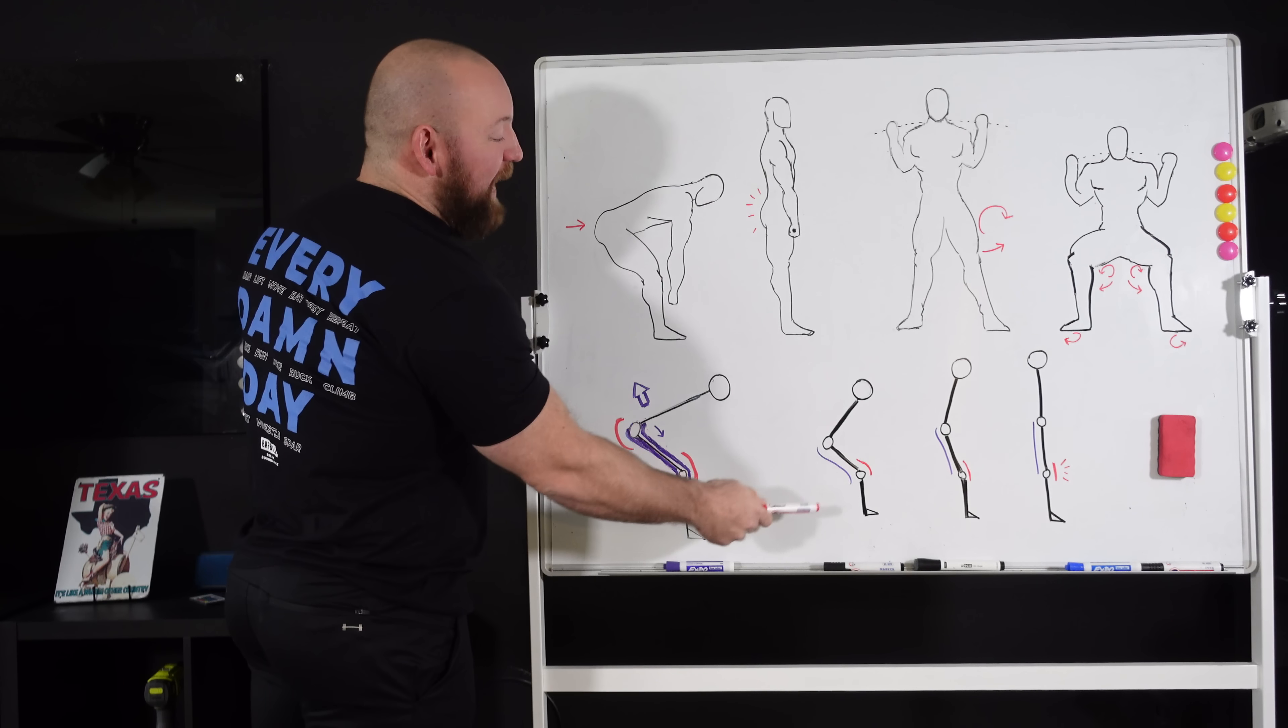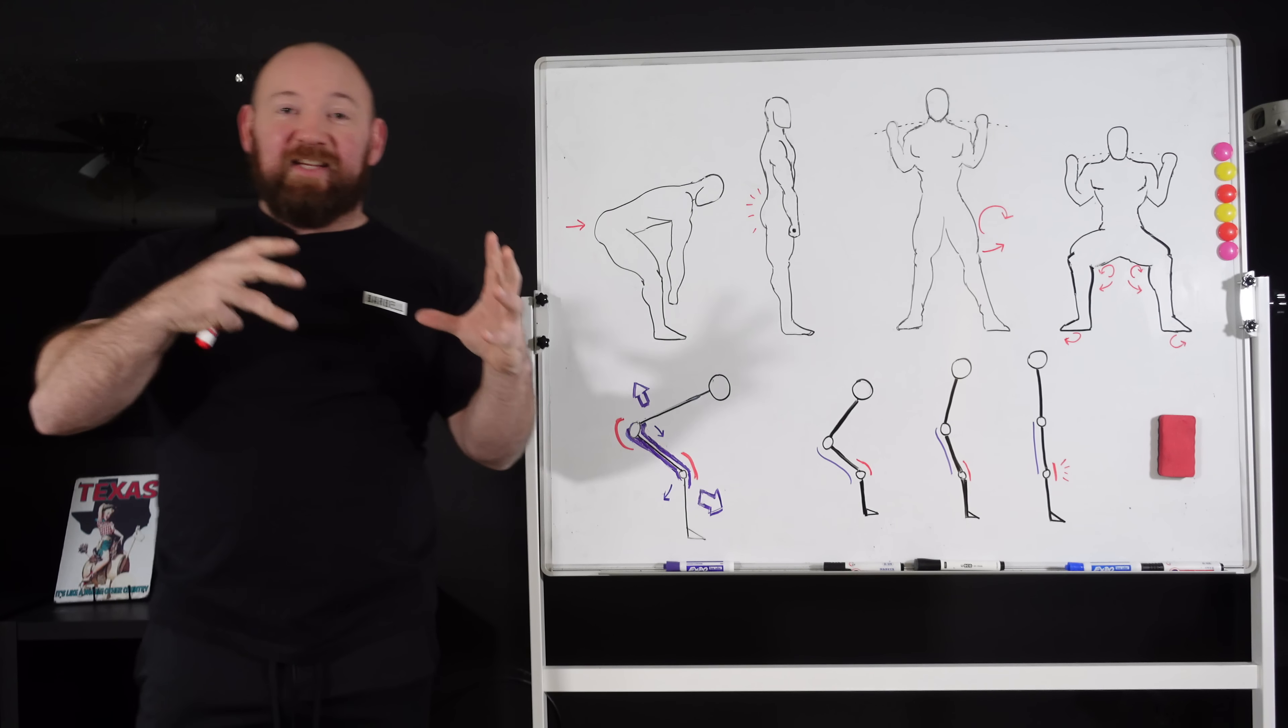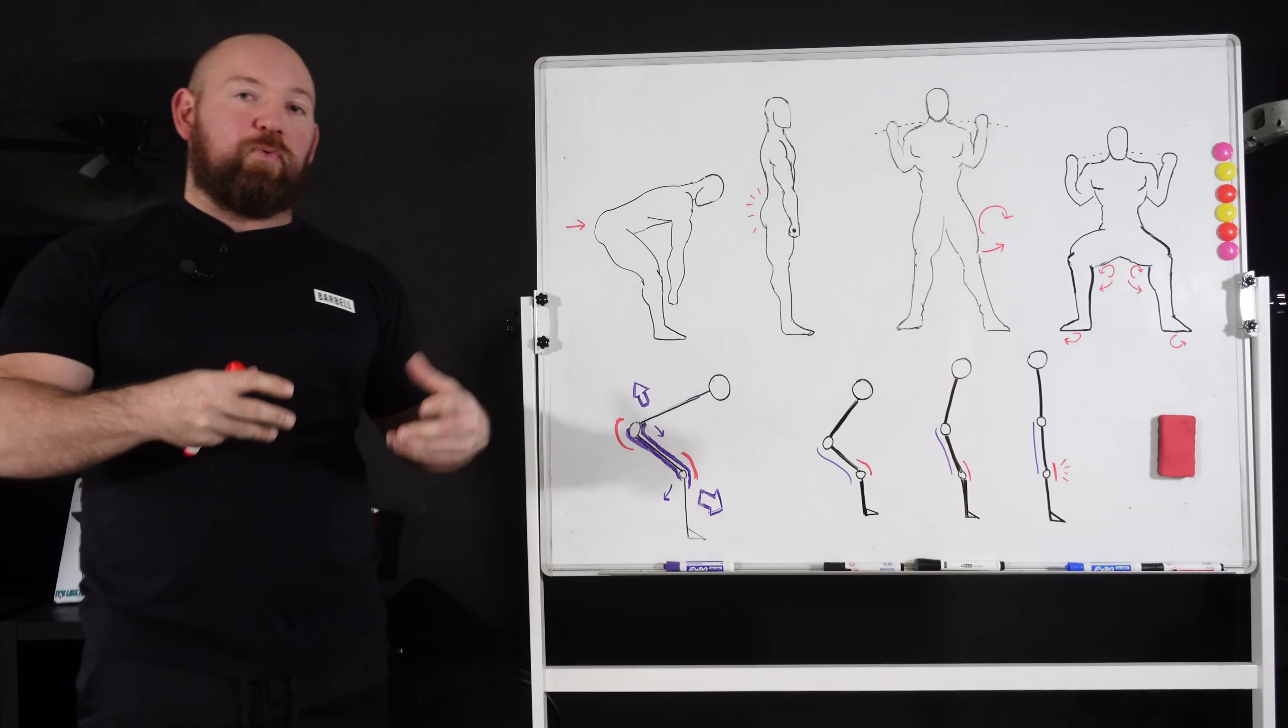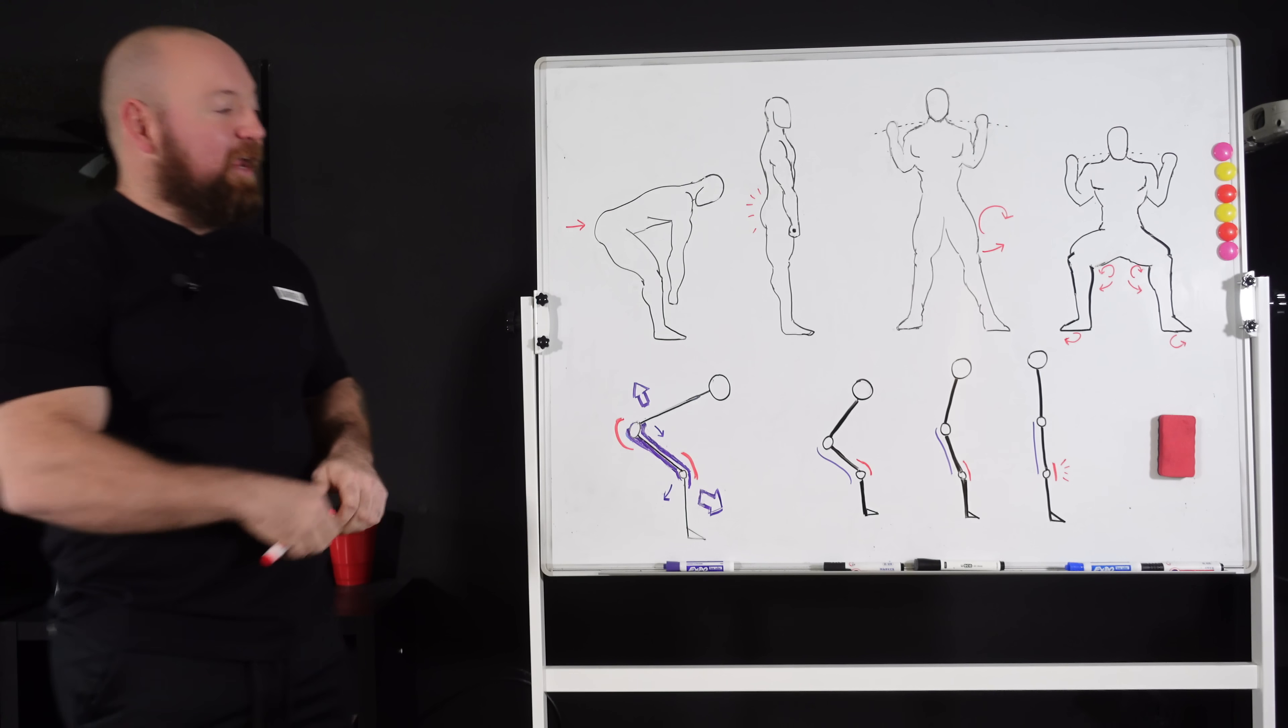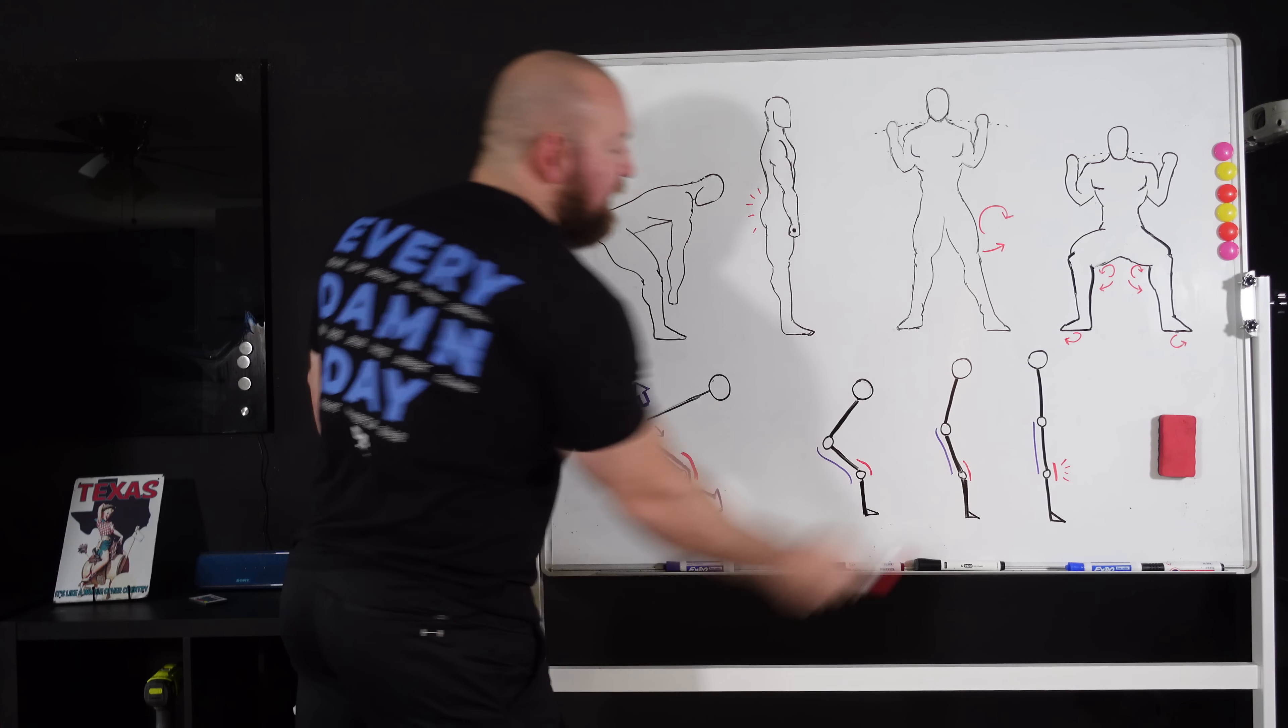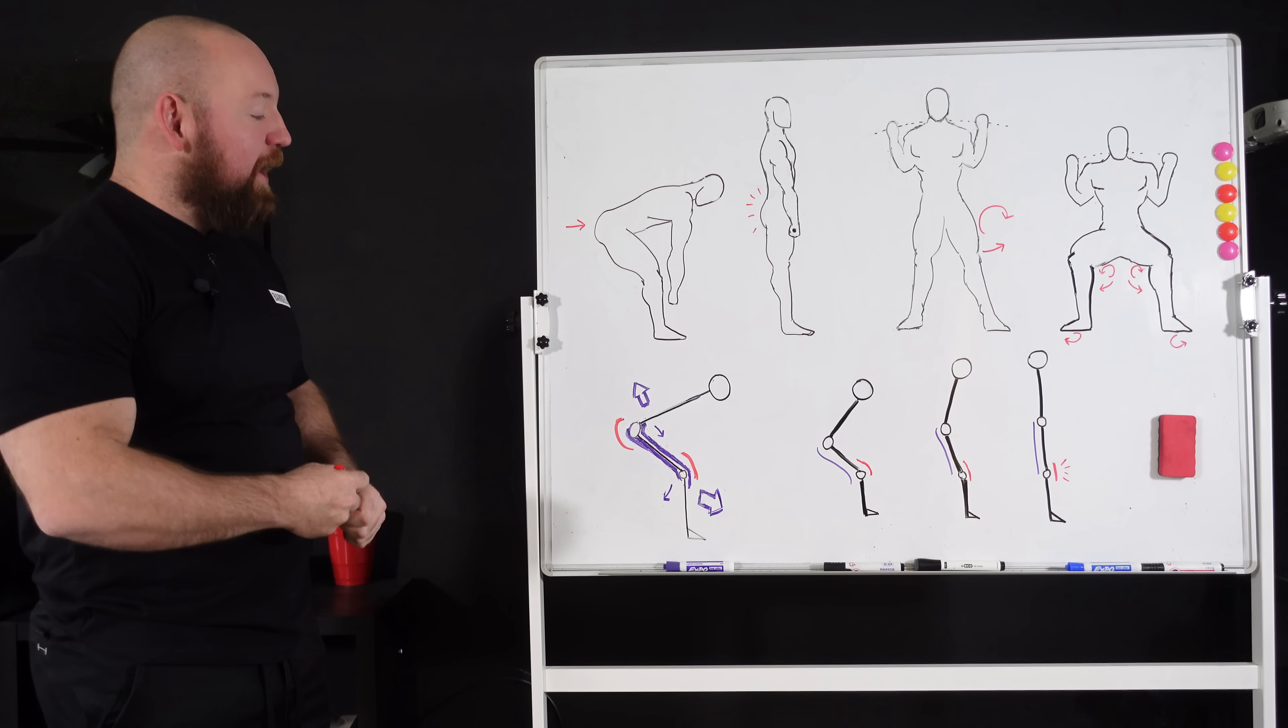In this example, the quadriceps actually strap themselves to the hamstrings. They work in conjunction. So as the hamstring contracts isometrically to maintain its rigidness, it is the work done by the quadriceps that causes the hamstring to tighten and to extend the hip. So basically the quads working at this joint helps you extend at that joint.